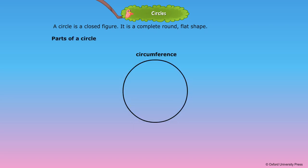Parts of a circle: Circumference is the distance around the circle. The middle point of a circle, which is equidistant from any point on the circumference, is called the center of the circle.